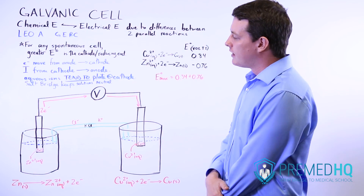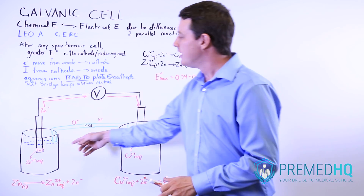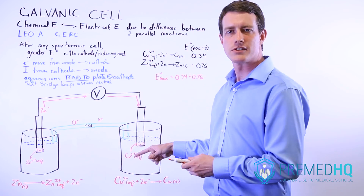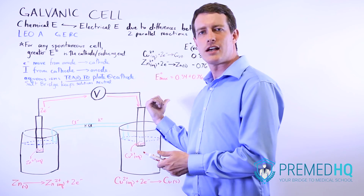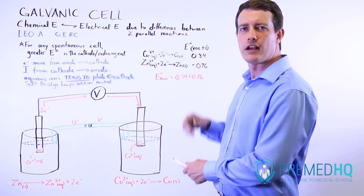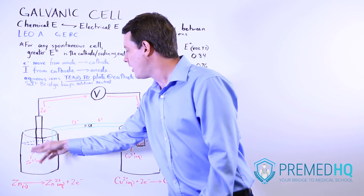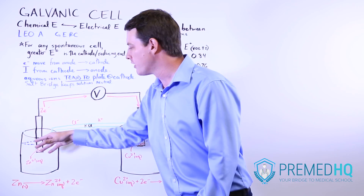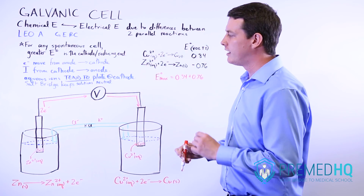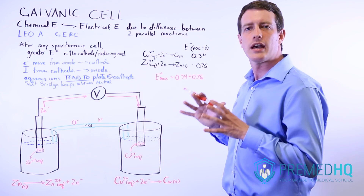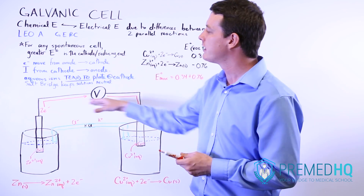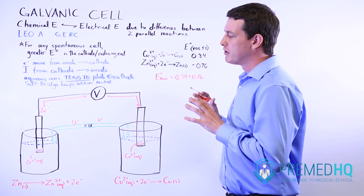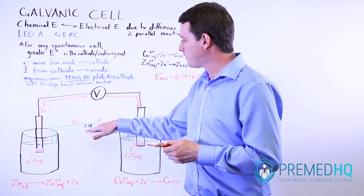An issue arises if the cell runs too long. As positive zinc ions accumulate in the anode bath and copper ions are depleted from the cathode bath, the electrons will no longer be attracted toward the cathode. Eventually, the buildup of positive charge will attract electrons back toward the anode. To prevent this short circuit — where electrons reverse direction — we use a salt bridge.